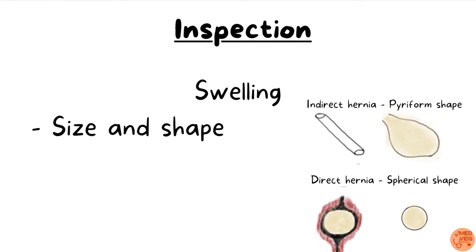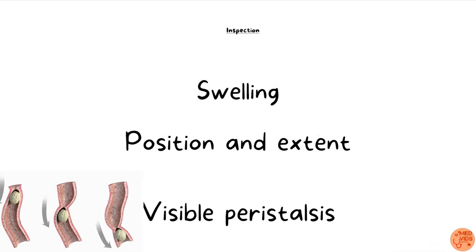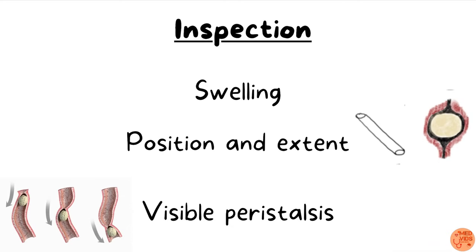About the swelling: if it is an indirect inguinal hernia, it is usually piriform in shape because it passes from the deep inguinal ring through the superficial inguinal ring into the scrotum, taking the shape of the canal. In direct inguinal hernia, it occurs through weakness in the anterior abdominal wall musculature, so it is spherical in shape. Indirect inguinal hernia extends from the deep inguinal ring to the superficial inguinal ring, whereas direct inguinal hernia presents just over the superficial inguinal ring. Visible peristalsis may also be noted if the content is intestines.